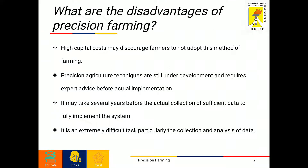Coming to the disadvantages of precision farming. The first is the high capital cost, which may discourage farmers from adopting this method. Precision agriculture techniques are still under development and require expert advice before actual implementation. It may take several years to collect sufficient data to fully implement the system, and data collection and analysis is an extremely difficult task.